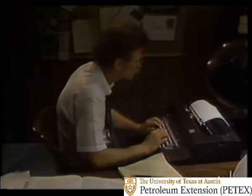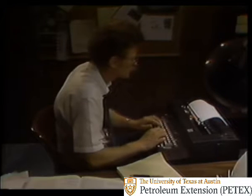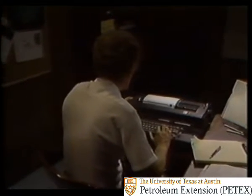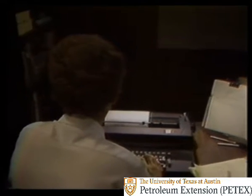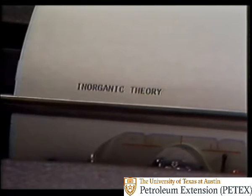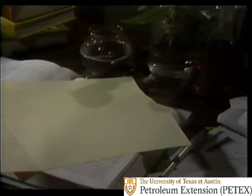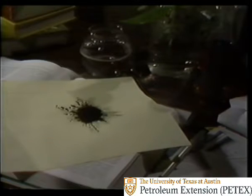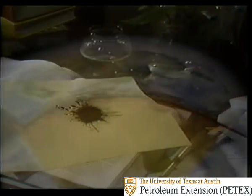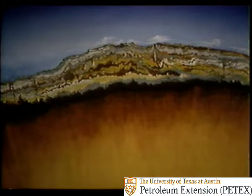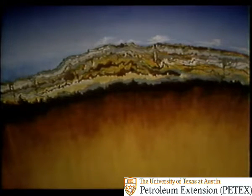We've talked about what hydrocarbons are. Now let's talk about the origin — how they're formed. Let's look at two theories. Start with the inorganic theory. Inorganic means non-living. This theory says that even though petroleum contains carbon, the basic unit of living matter, it didn't come from plants and animals. Instead, it developed in the Earth's crust from carbon and hydrogen liberated from molten rocks, combining with other elements to form petroleum hydrocarbons.